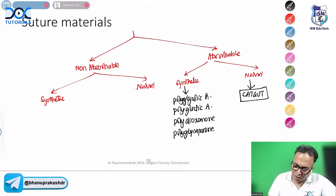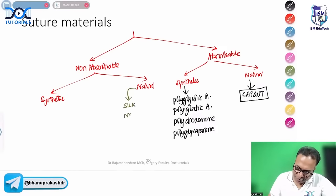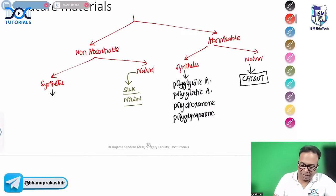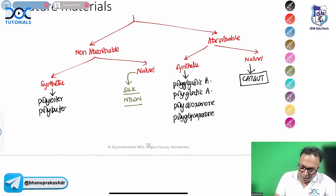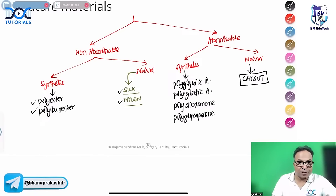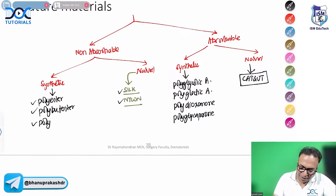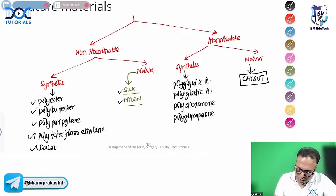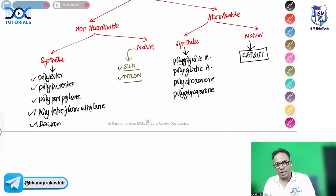Naturally available non-absorbable materials are silk and nylon. Synthetic non-absorbable materials include polyester, polybutylester, polypropylene, and polytetrafluoroethylene (PTFE). Catgut is derived from sheep's small intestine submucosa. Plain catgut is absorbed in 10 days; chromic catgut (chromium-coated) in 60–90 days. Catgut is stored in isopropyl alcohol.